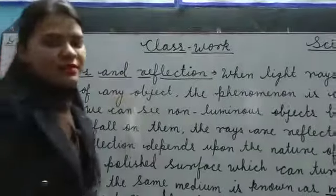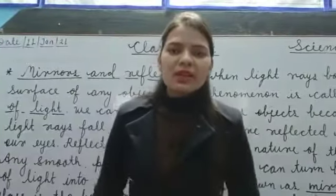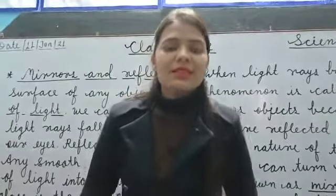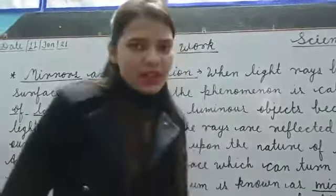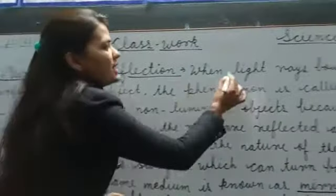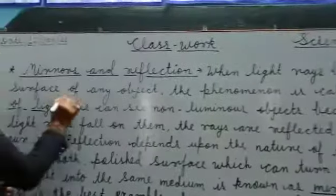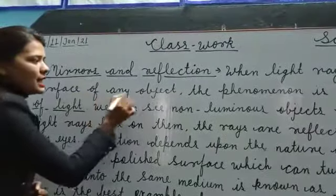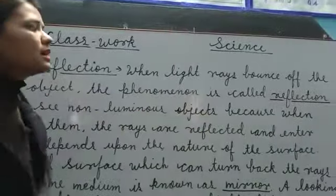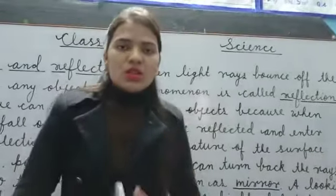Today we will learn about mirror and reflection. So firstly, let's discuss about reflection — what is reflection? When light rays bounce off the surface of any object, the phenomenon is called reflection of light.